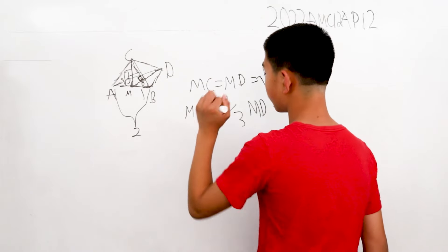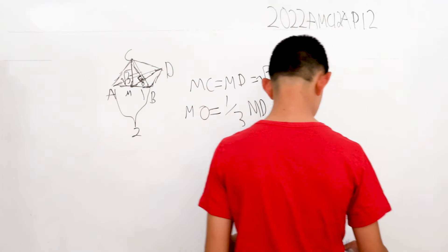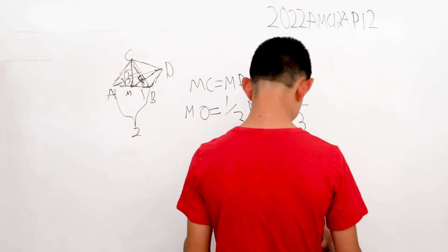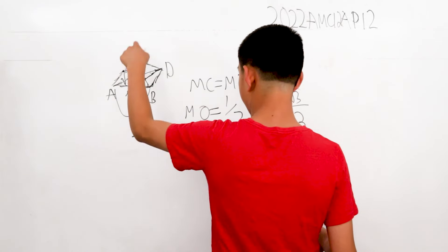So, the cosine of CMD will be MO, this, over MC, which is that.